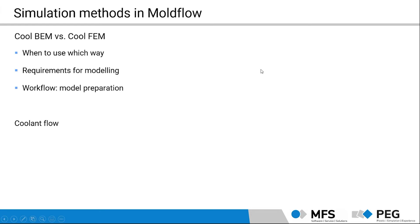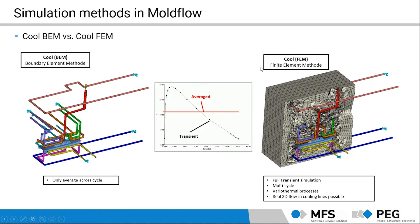And then we will go really detailed into the different methods. What does it mean, Cool BEM, Cool FEM? The BEM method does not really have a mold design around, while the Cool FEM always requires a 3D mold mesh. And also, this can be used for a much wider range of simulations itself. For example, multi-cycle simulations, various thermal processes. And also, we can have a real 3D flow in the cooling lines.